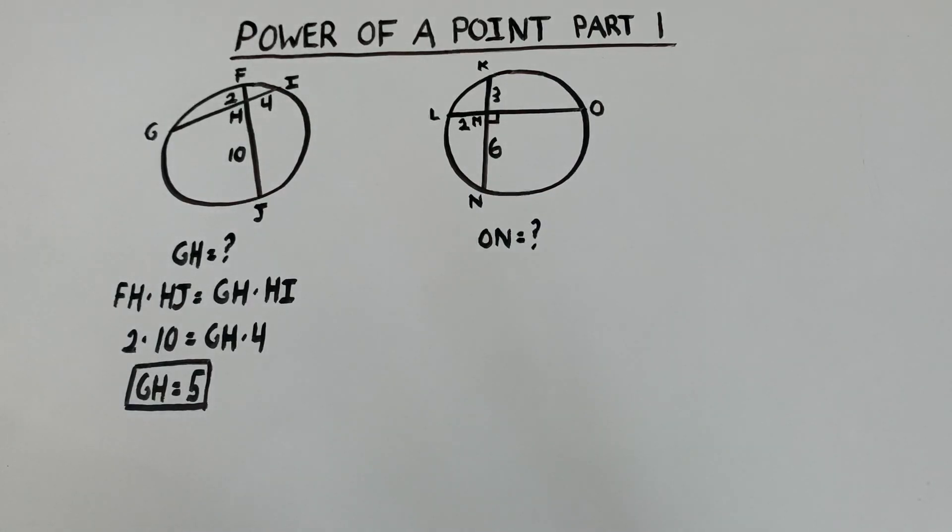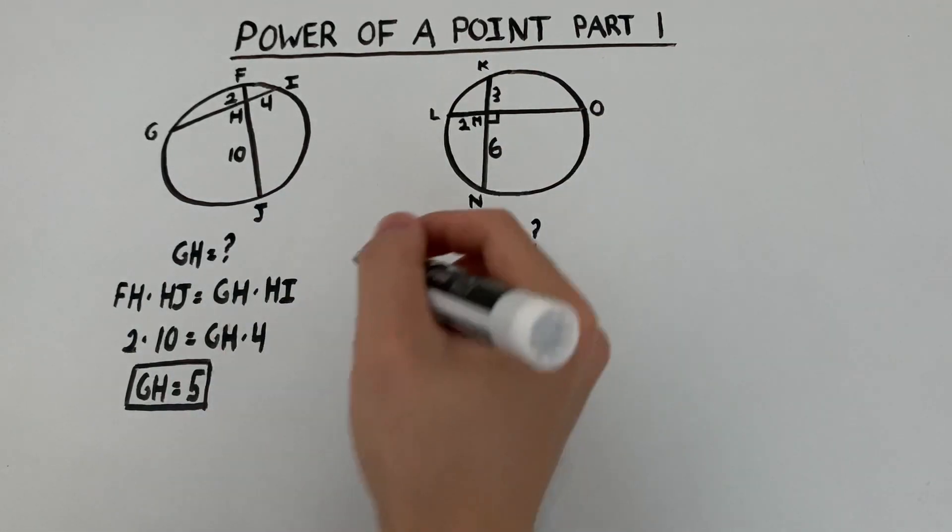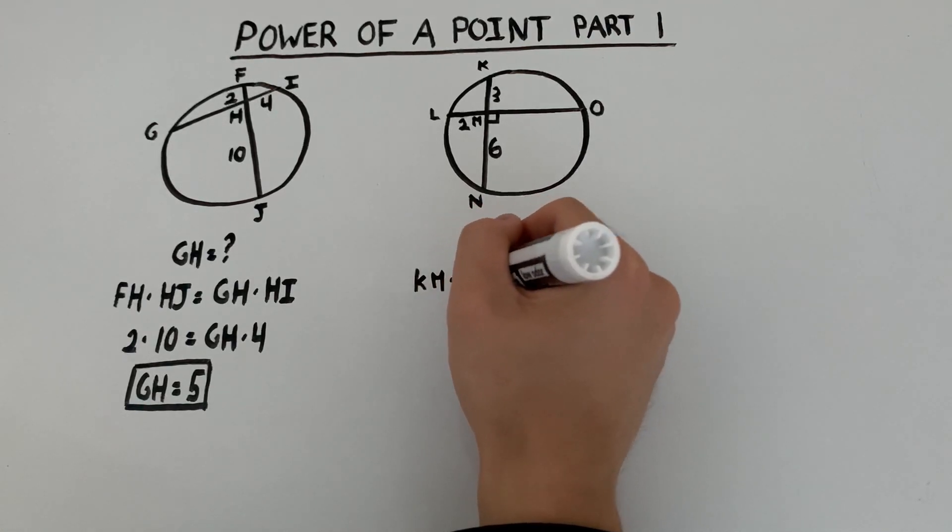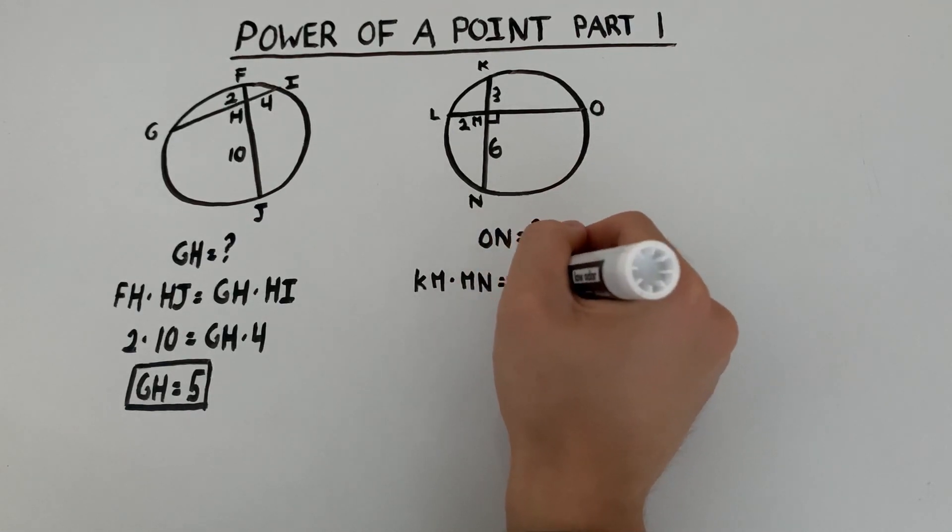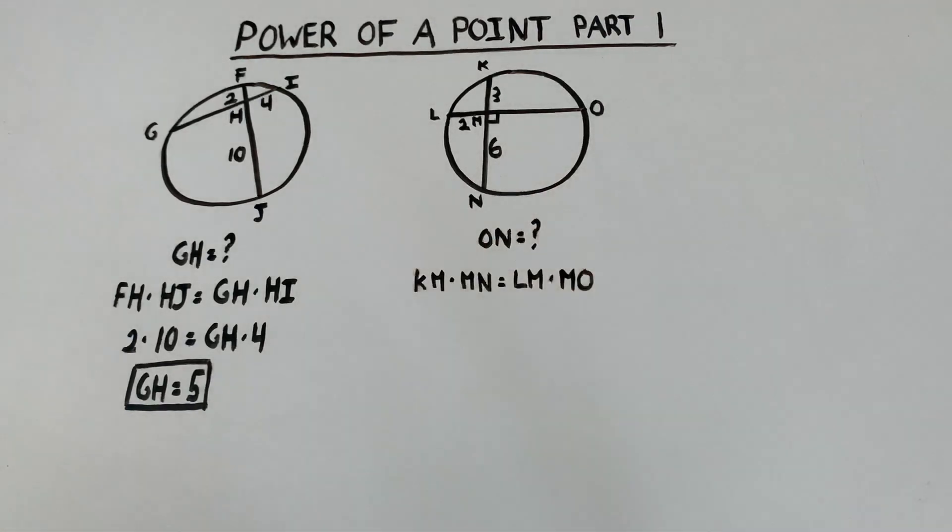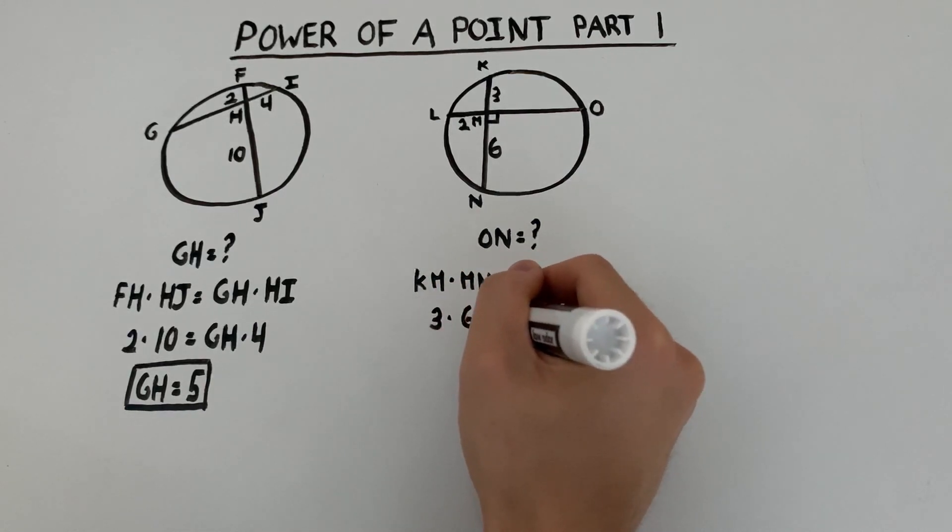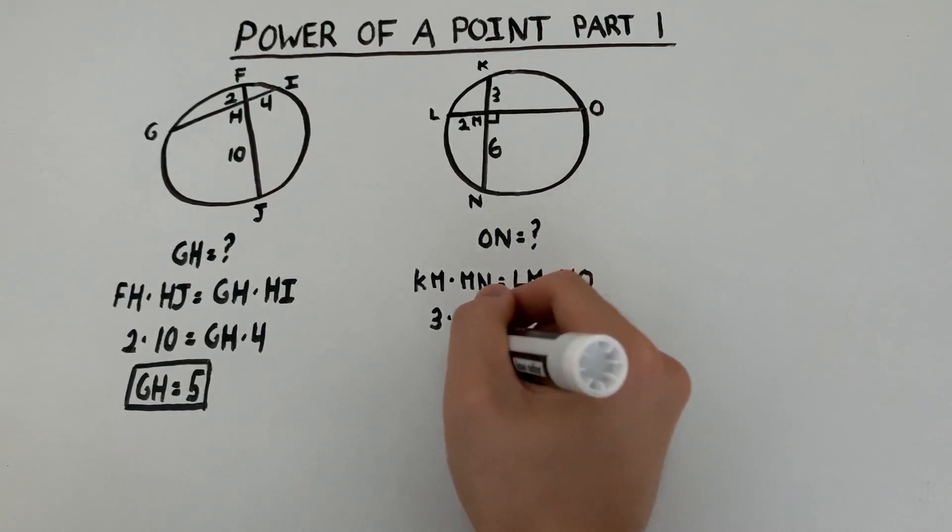Now we're going to start off by using power of a point on point M, which says that KM times MN is equal to LM times MO. KM is 3, MN is 6, LM is 2, so we can find MO to be 9.